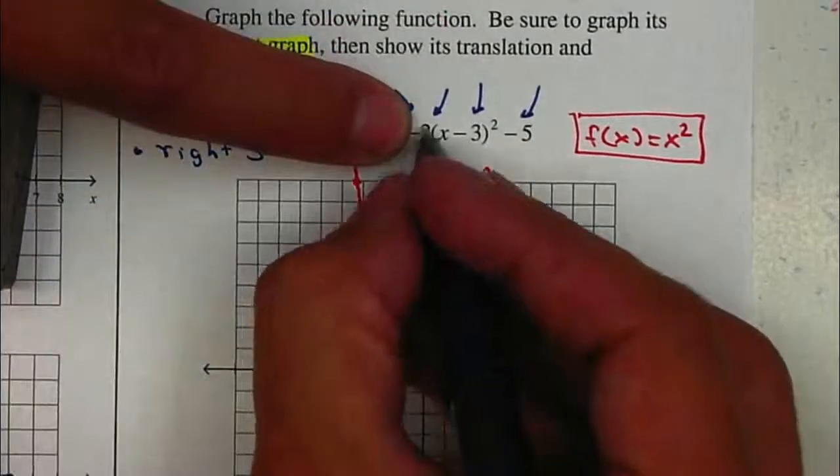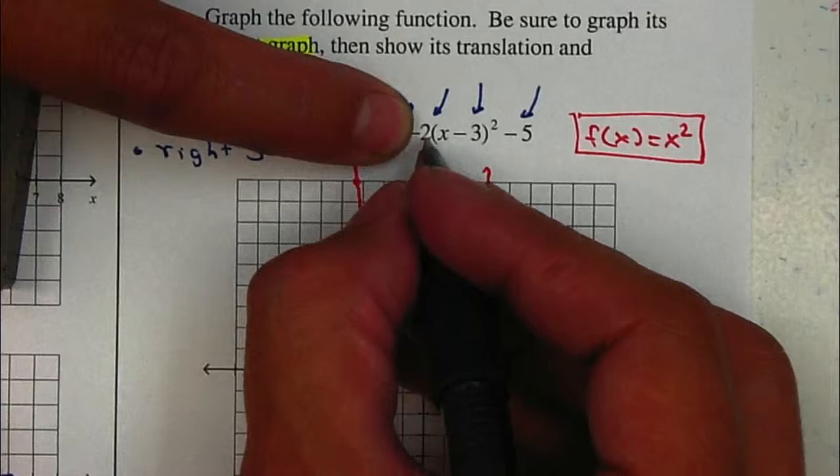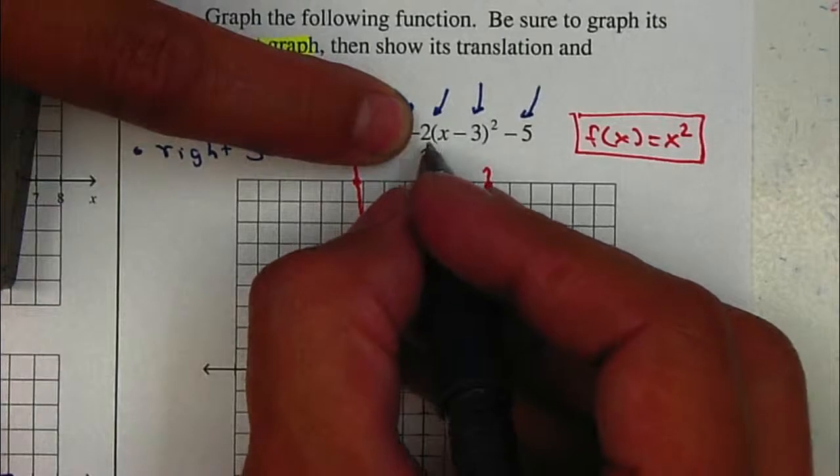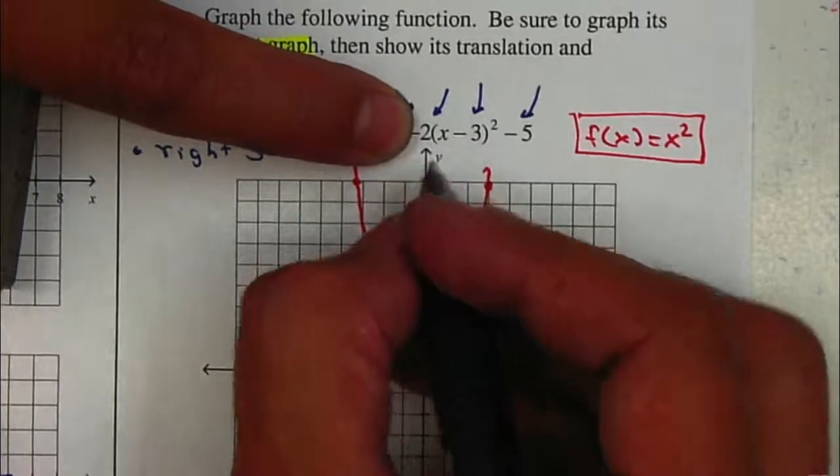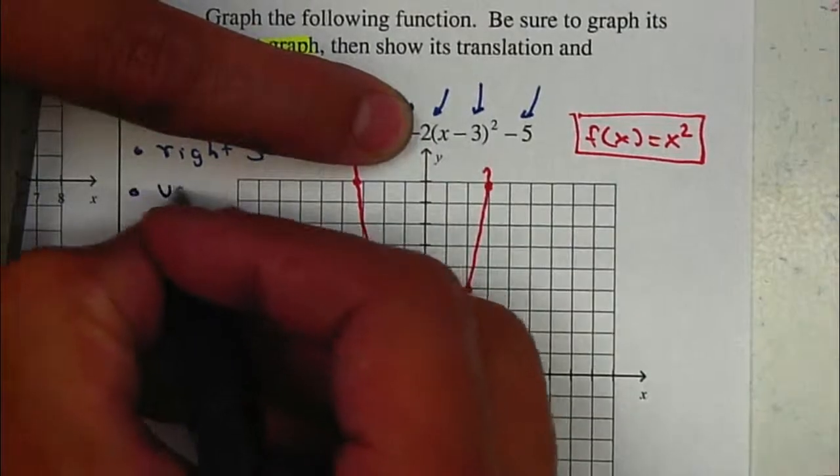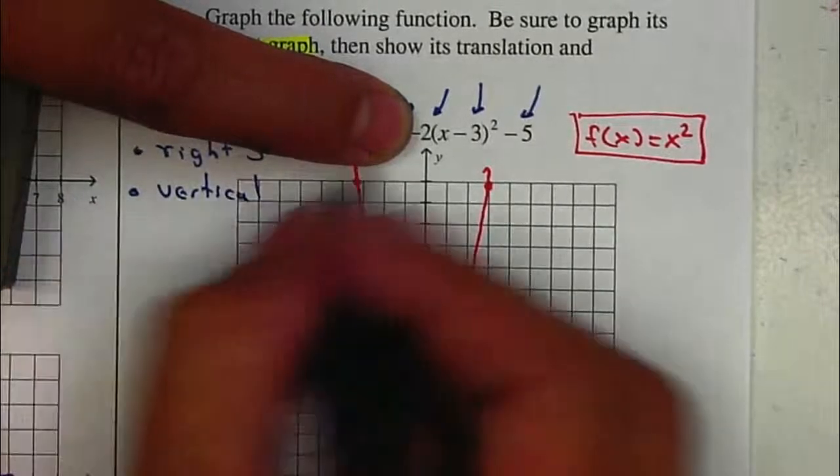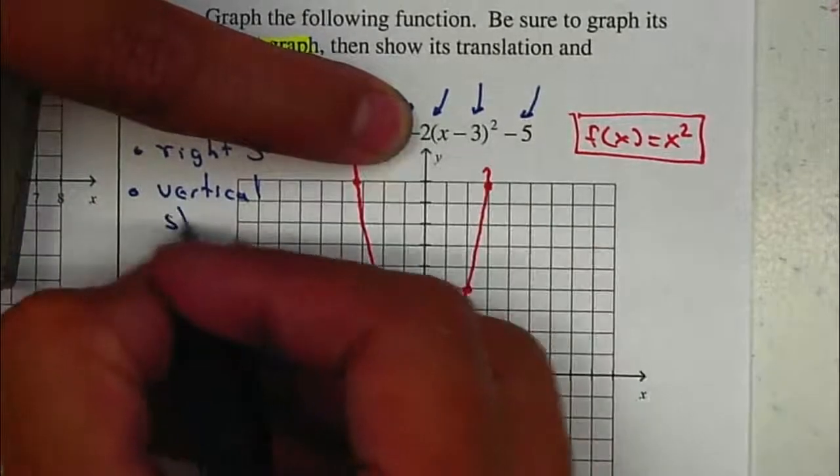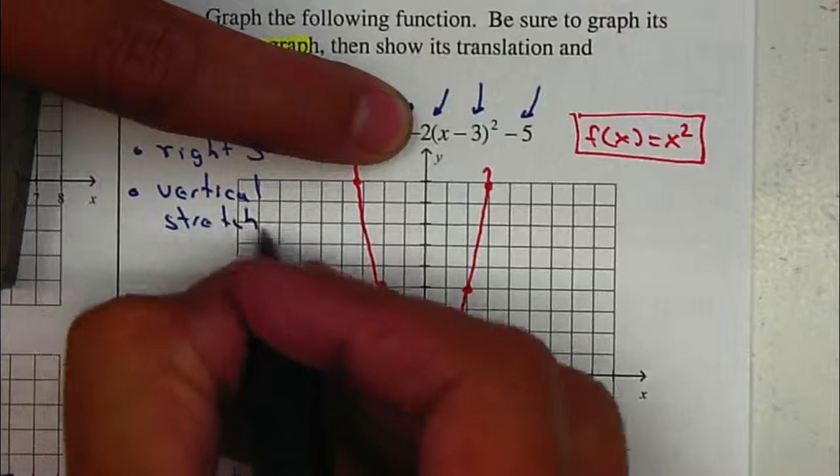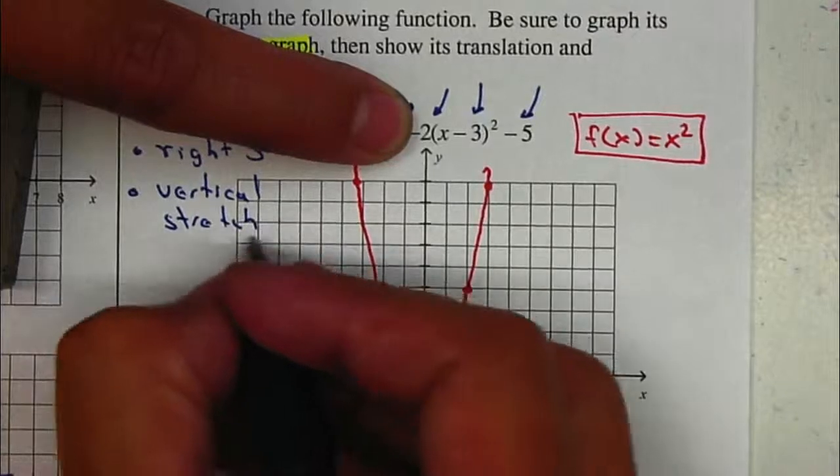The 2, it's outside. It's multiplying, so it's going to be a transformation. Remember, whenever it's outside, it's going to be a vertical transformation. And because it's times 2, it will be vertical stretch by 2.